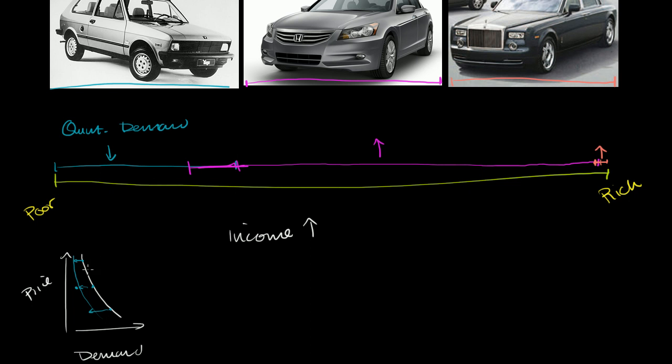But anyway, going back to this, so we see that this cheap car right here had the unusual property that when incomes went up, the demand curve shifted to the left. And that's why we call this an inferior good. These other two cars, when income went up, demand went up. The whole curve got shifted to the right. So they are normal goods.